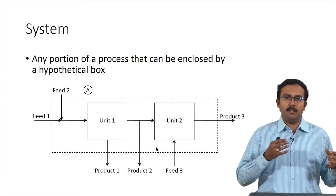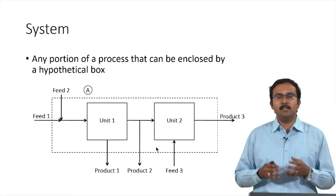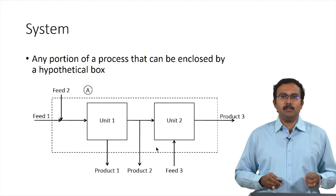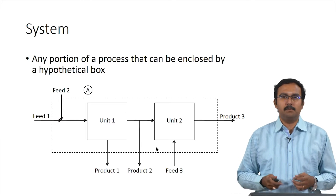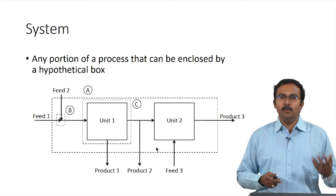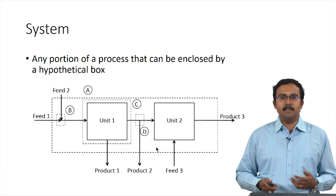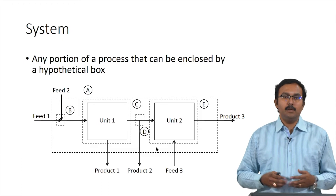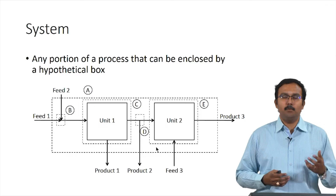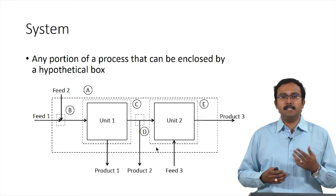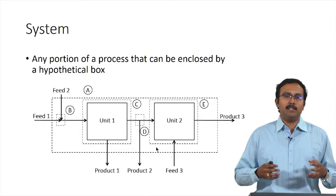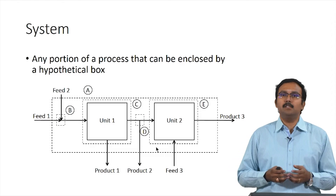The overall system does not account for the mixing points, splitters, or units separately. Instead of the overall system, you can also draw boxes covering individual systems — for example, only the mixing point, only unit 1, the splitter, or unit 2 as individual systems. You can also draw combinations such as mixing point plus unit 1, or unit 1 plus splitter, and so on.